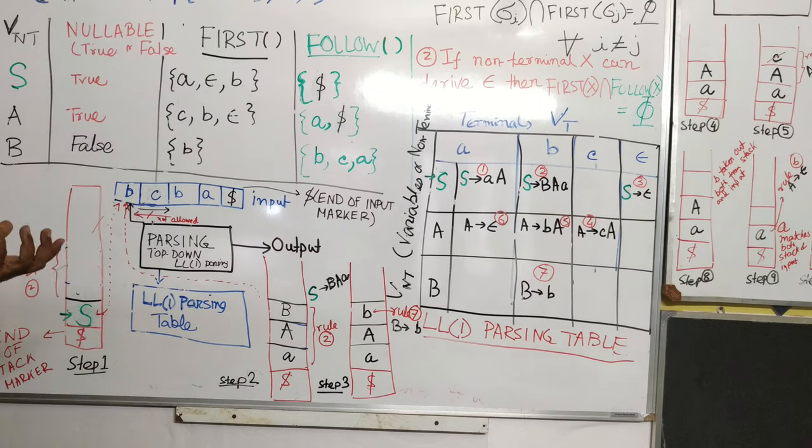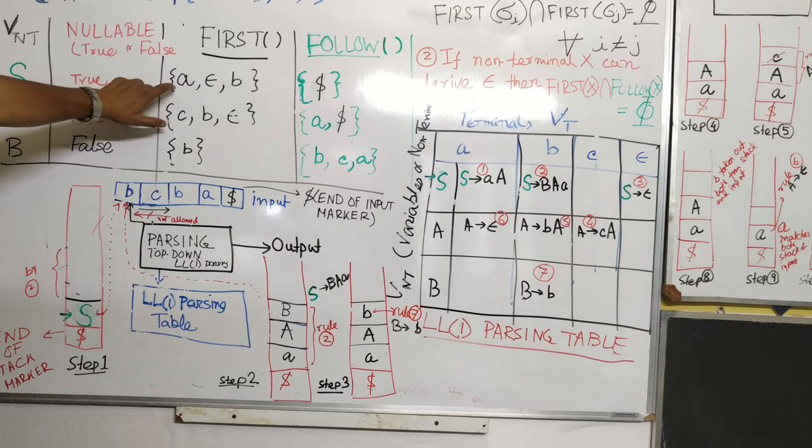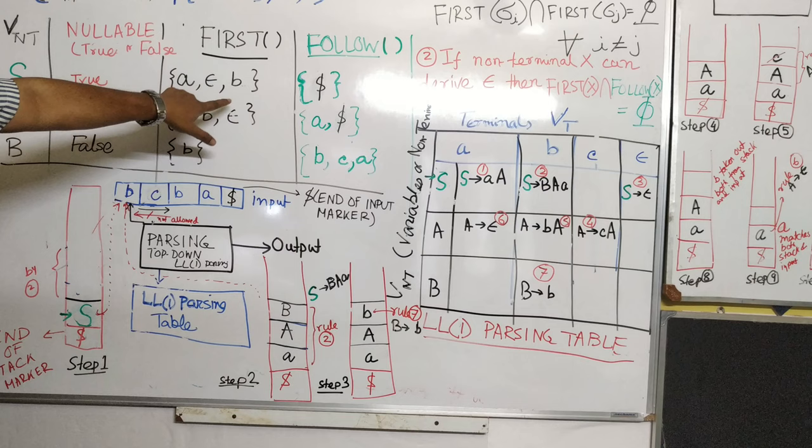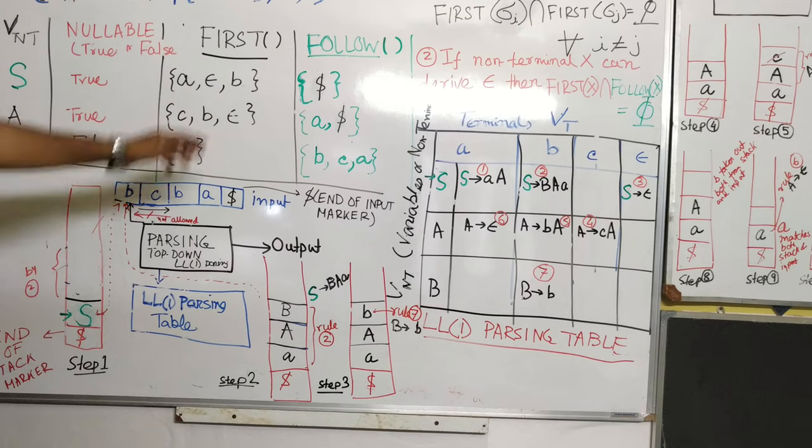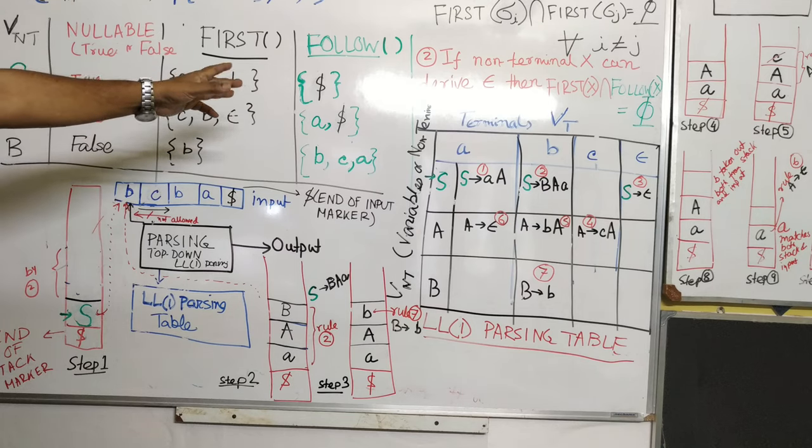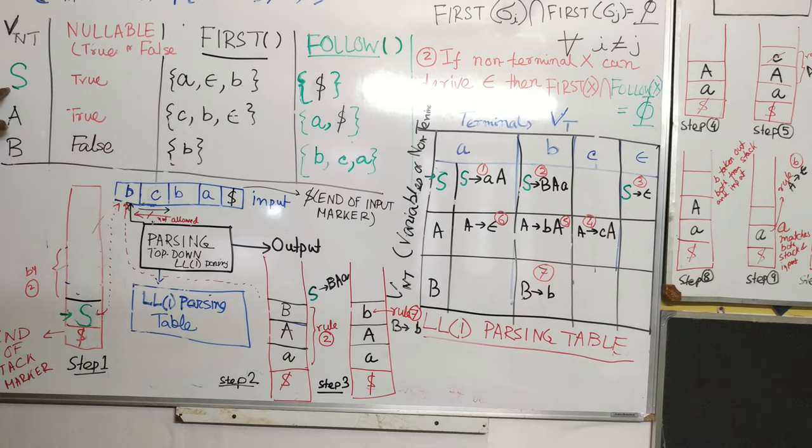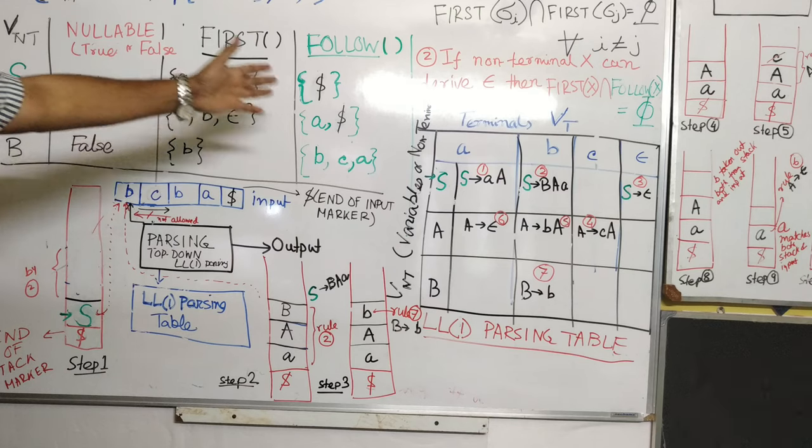That is, how many terminals comes in the first set, and how many terminals follow, there should be no common. It should be disjoint intersection. Remember these all, it should be set of terminals, epsilon can be there, dollar cannot be there in first. Dollar, the end of input marker, can only come in the follow section, epsilon cannot go to the follow.